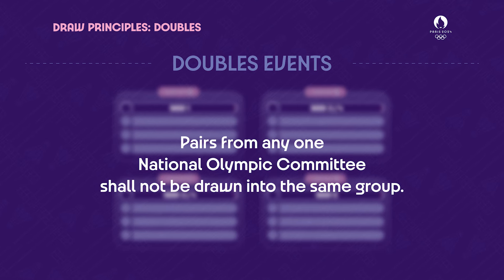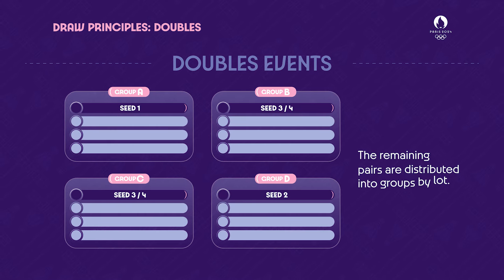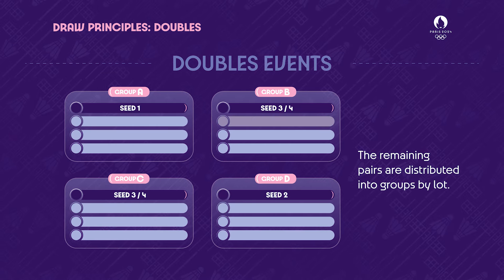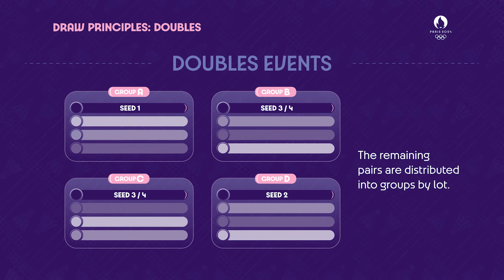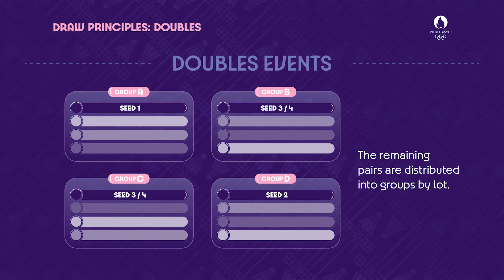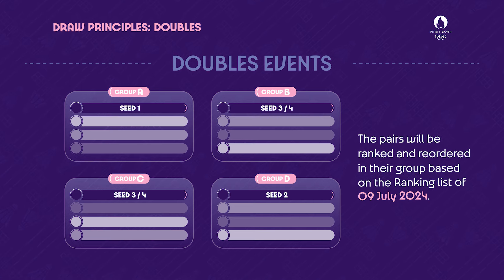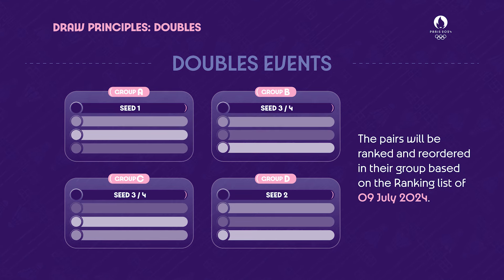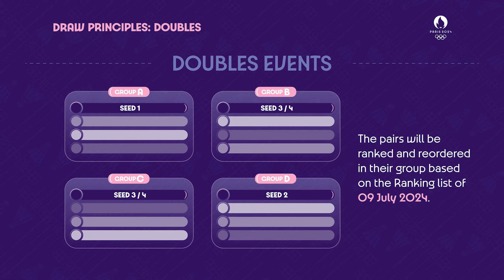Pairs from the same National Olympic Committee shall not be drawn into the same group. The remaining pairs are distributed into groups by lot according to the rules in section 5.4.1.2, clause 3.3.3. The pairs will be ranked in their group based on the ranking list of Tuesday the 9th of July 2024.